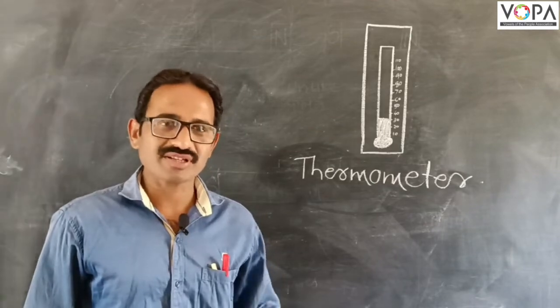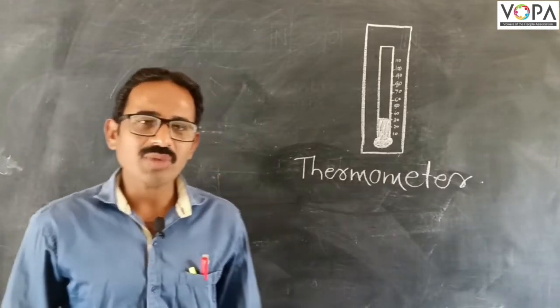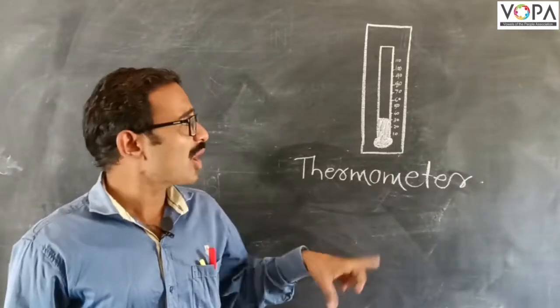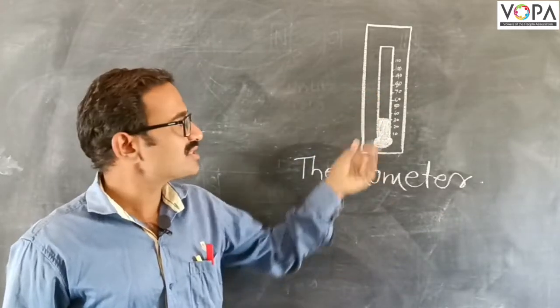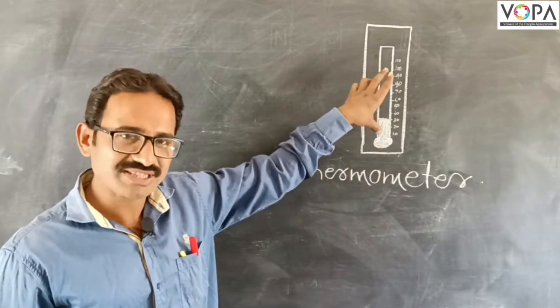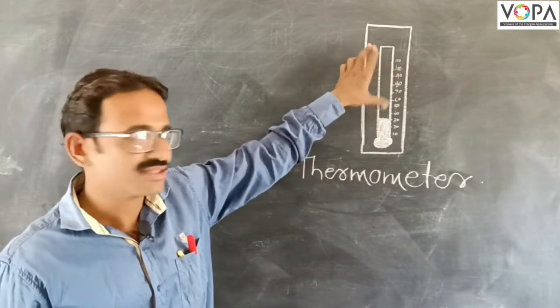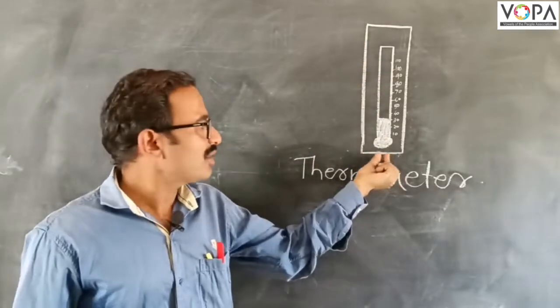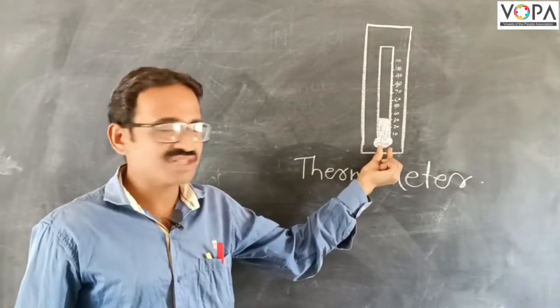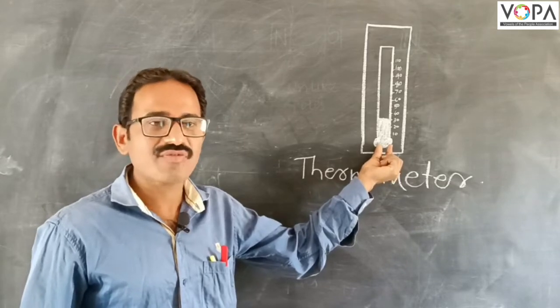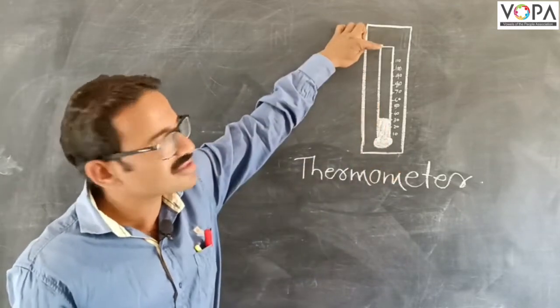The thermometer is a long narrow tube. One end is open, the other end is closed.